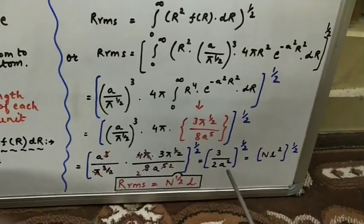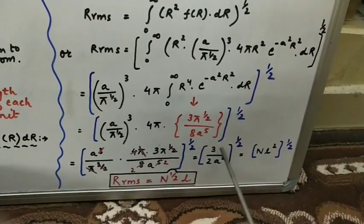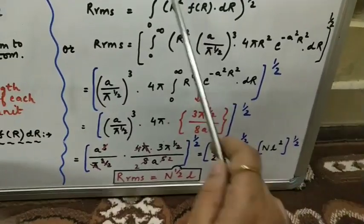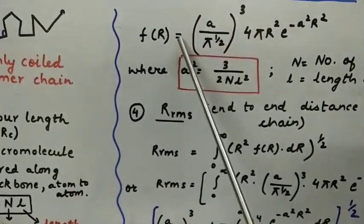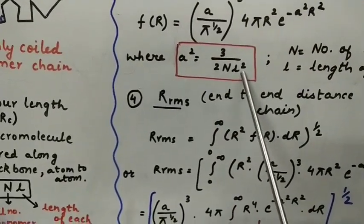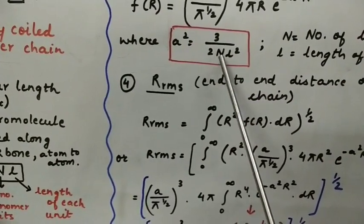Now if we can open this, with this same formula. We know that a² is equivalent to what. You see here we talked above. A² is equals to 3 upon 2NL². If I bring this a² here, then it becomes 3 upon 2a². And this NL² will go to left hand side. So I can say NL² is equals to 3 upon 2a².